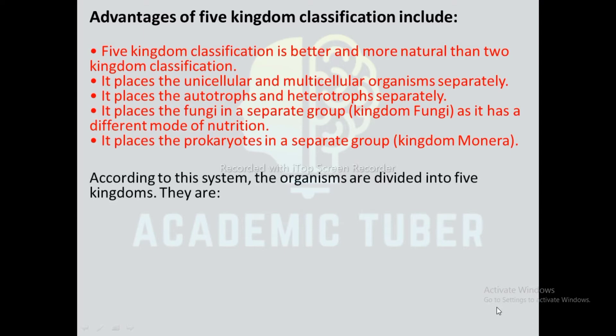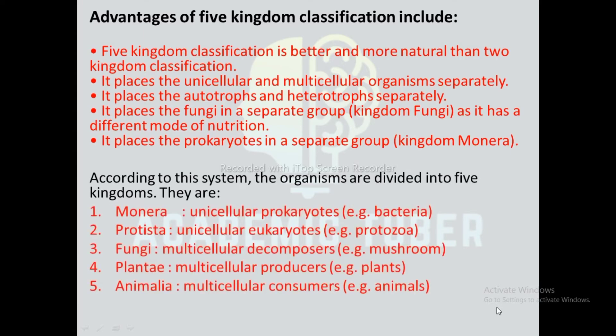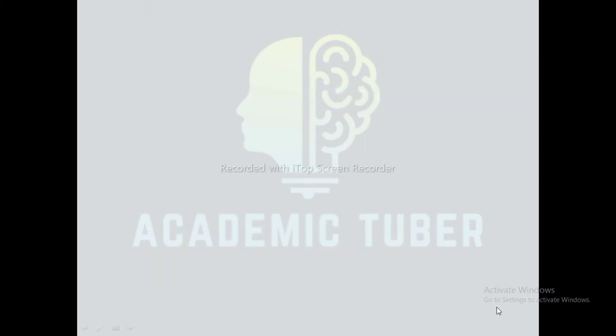According to this system, organisms are divided into five kingdoms: Monera — unicellular prokaryotes, e.g. bacteria; Protista — unicellular eukaryotes, e.g. protozoa; Fungi — multicellular decomposers, e.g. mushroom; Plantae — multicellular producers, e.g. green plants; Animalia — multicellular consumers, e.g. animals.